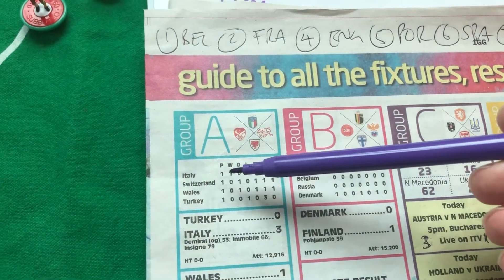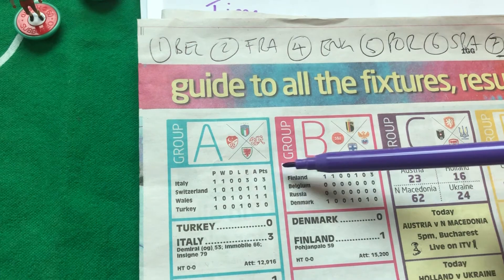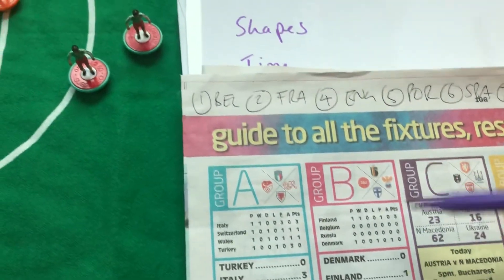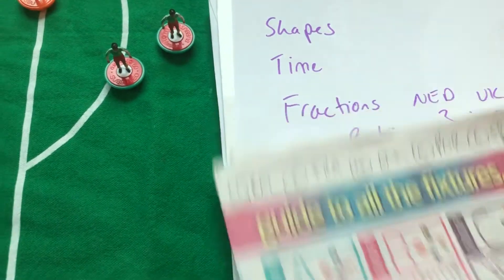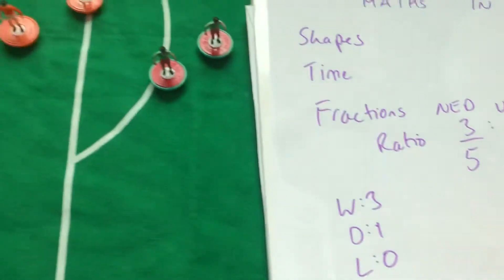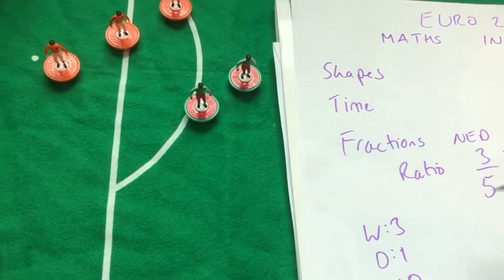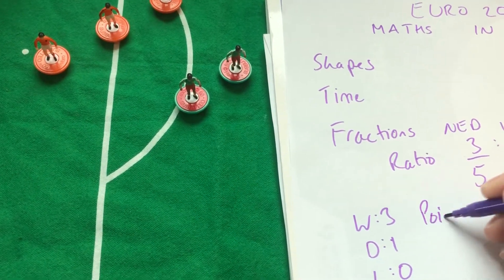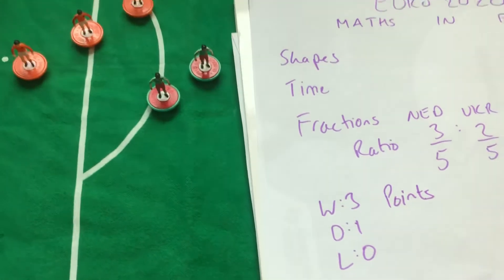Italy just won today, so this needs to be updated — they'll get another three points and go up to six. So there's shape, time, fractions, points, and also lots of problem solving.